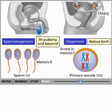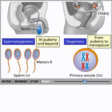At birth, a human female has one to two million primary oocytes suspended in meiosis I. By the time of puberty, only about 400,000 viable primary oocytes remain. Each month from puberty to menopause, several primary oocytes continue their development, but typically only one successfully develops into a mature egg.